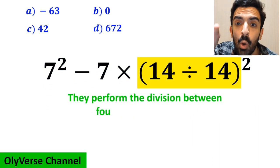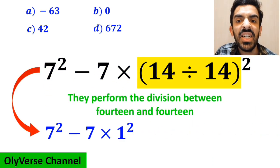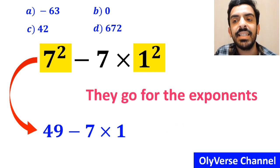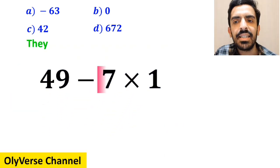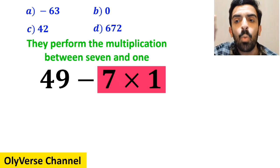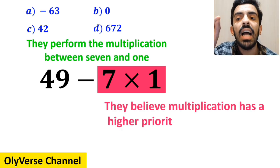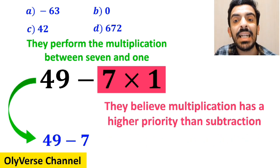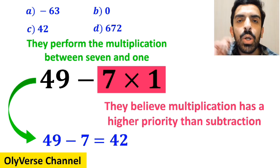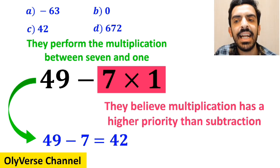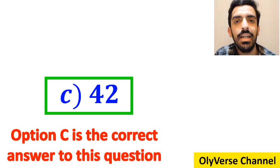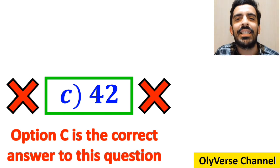In the next step, they perform the division between 14 and 14, and rewrite this expression as 7 squared minus 7 multiplied by 1 squared. Then they perform the multiplication between 7 and 1, because they believe multiplication has a higher priority than subtraction. And this expression simplifies to 49 minus 7, which finally gives them the answer 42. Without any hesitation, they quickly say that option C is the correct answer. However, it's not the correct answer to this question.